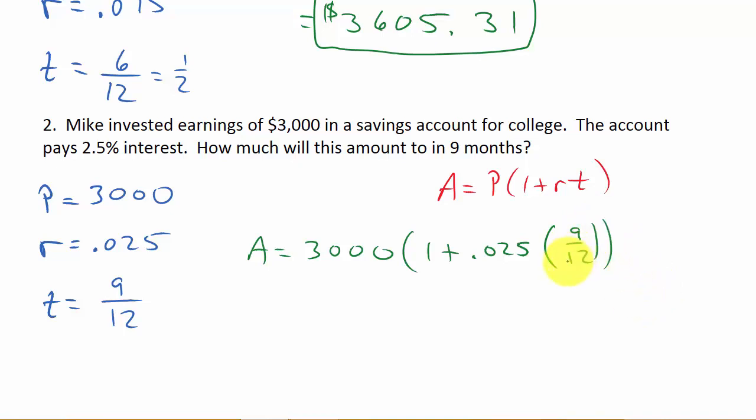Alright, now, let's just punch this in the calculator like we did the last one. So we got 0.025, times 9, equals, divided by 12, equals, plus 1, equals, times, 3,000. And that is going to give us A is 3,056.25.